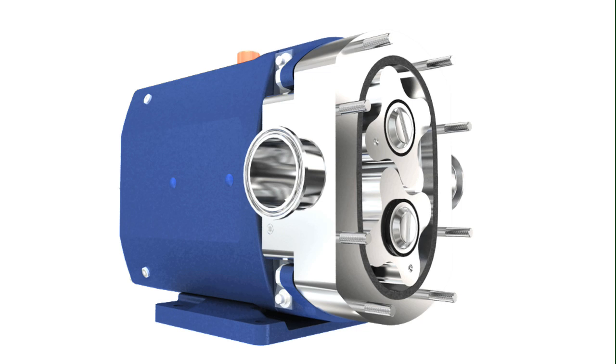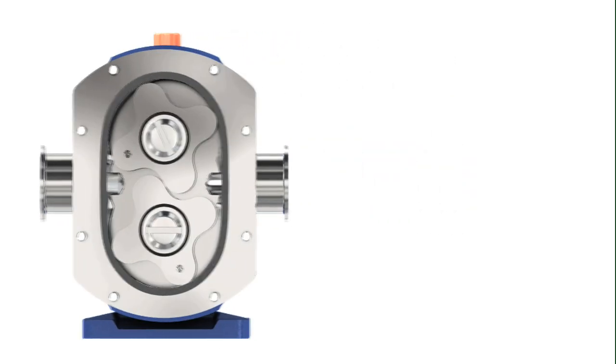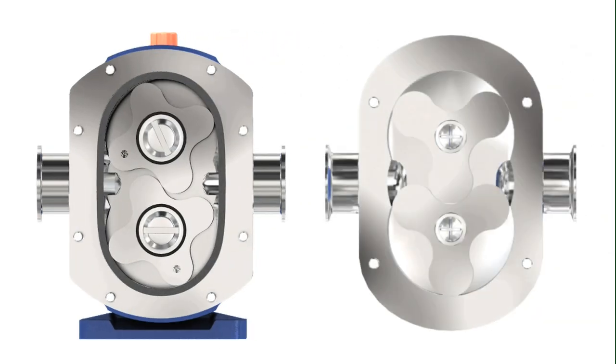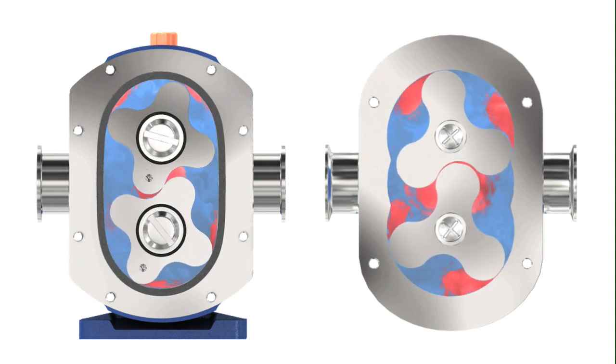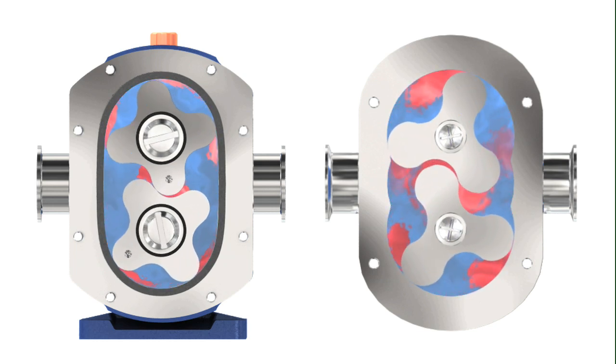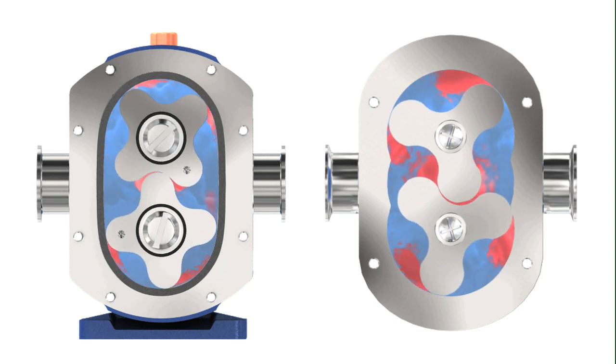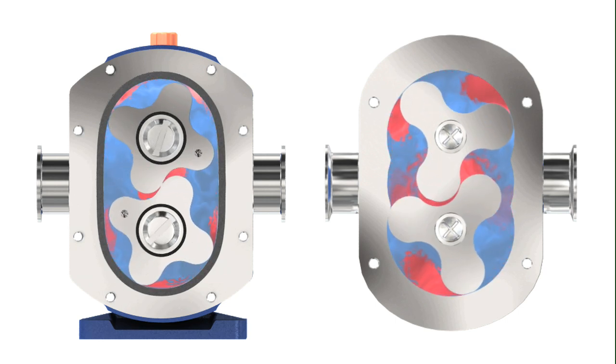To ensure exceptional product handling of shear-sensitive liquids, the SX incorporates close clearances to minimize product slip. The four-lobe geometry reduces shear of the liquid as it enters and exits the lobe cavities and also reduces pulsation.